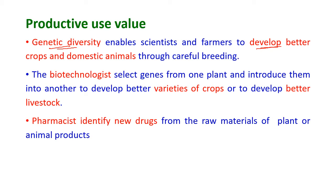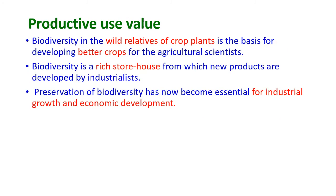Genetic diversity enables scientists and farmers to develop better crops and domestic animals through careful breeding. Biotechnologists select genes from one plant and introduce them into another to develop better crop varieties or better livestock. Pharmacists identify new drugs from raw materials of plant or animal products. Biodiversity in wild relatives of crop plants is the basis for developing better crops. Biodiversity is a rich storehouse from which new products are developed by industrialists, and its preservation has become essential for industrial growth and economic development.